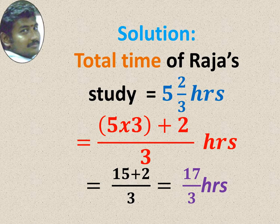5 2 by 3, when you convert into improper, we will get 17 by 3. First you have to multiply. 5 into 3 is 15. Then add the numerator 2. So 15 plus 2 is 17, 17 by 3 hours.